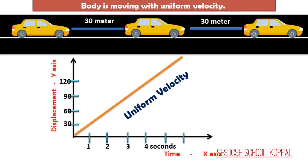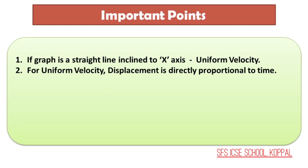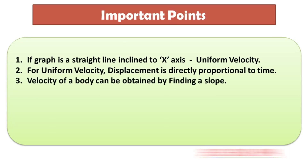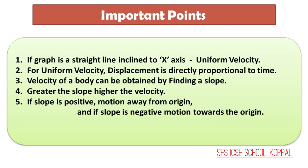Please remember the following points. Number 1: if the graph is a straight line inclined to the x-axis, the body is moving with uniform velocity. Number 2: for a body moving with uniform velocity, displacement is directly proportional to time. Number 3: velocity of a body can be obtained by finding the slope — divide the difference of y-coordinates of two points by the difference of the x-coordinates of the same two points. Number 4: greater the slope, that is the more inclined the straight line, the higher the velocity. Number 5: if the slope is positive, it represents motion away from the origin; if slope is negative, it represents motion towards the origin.